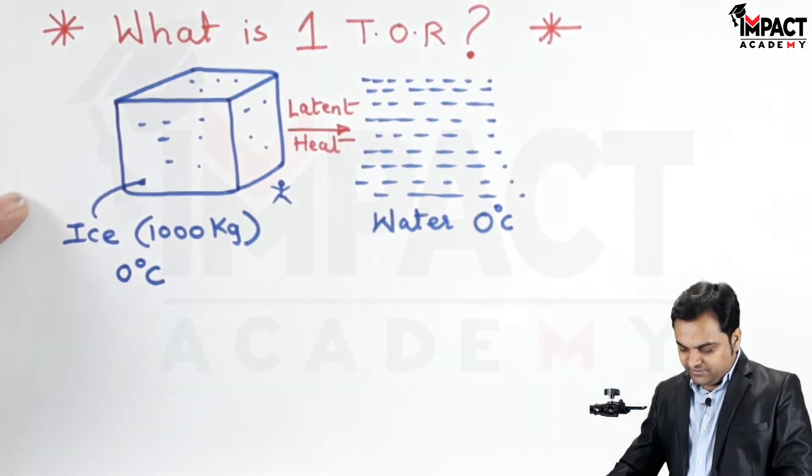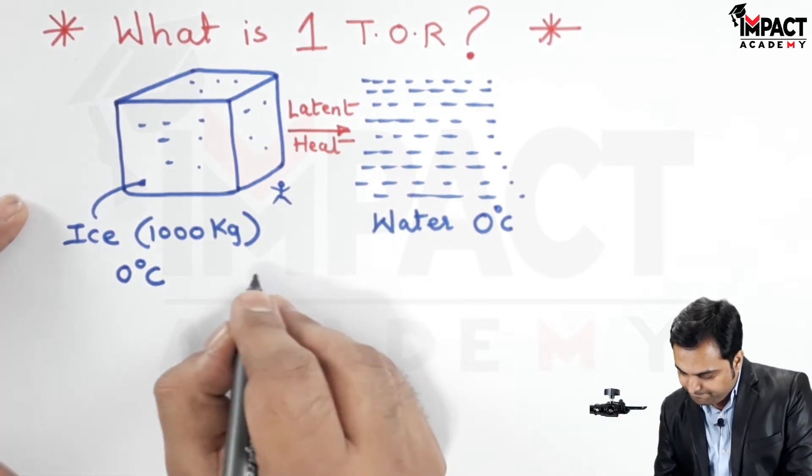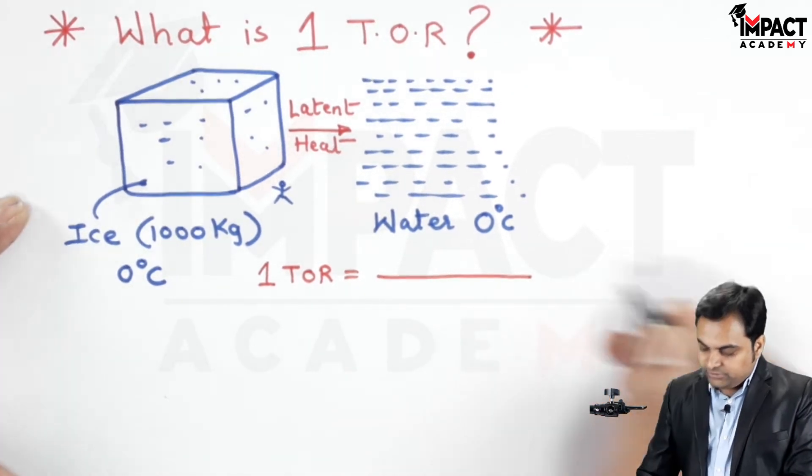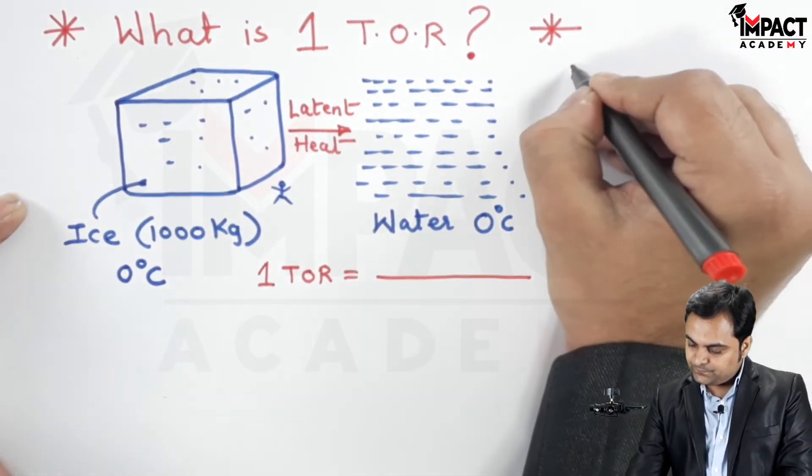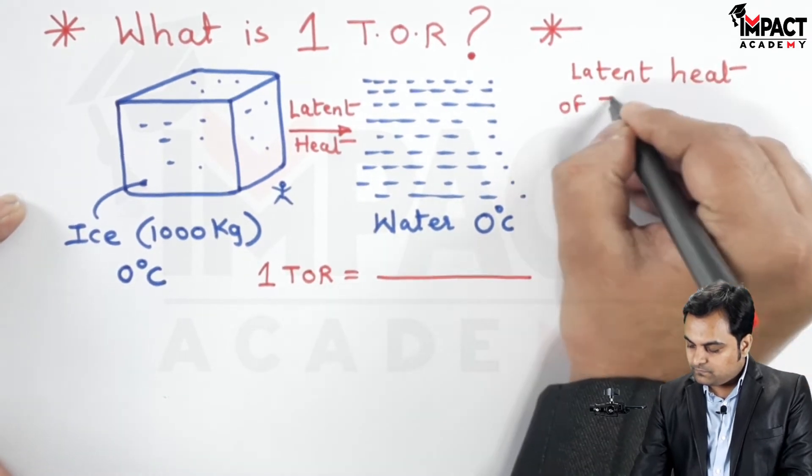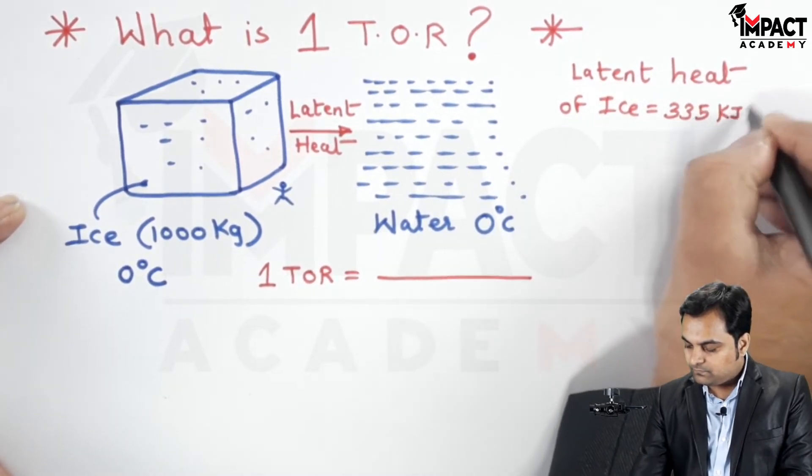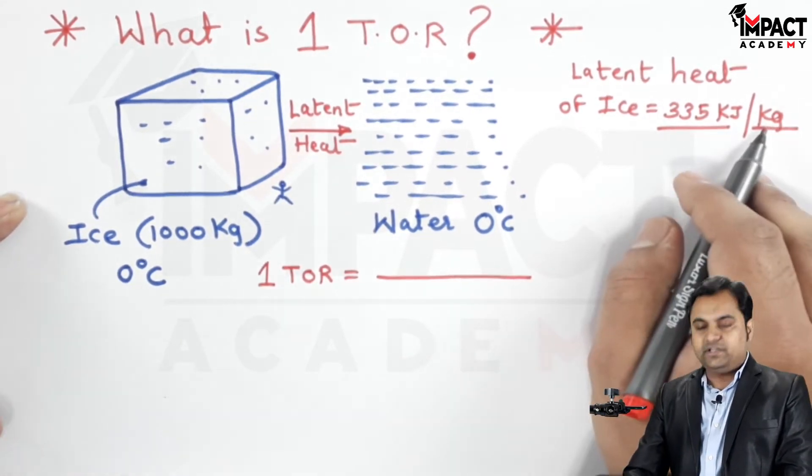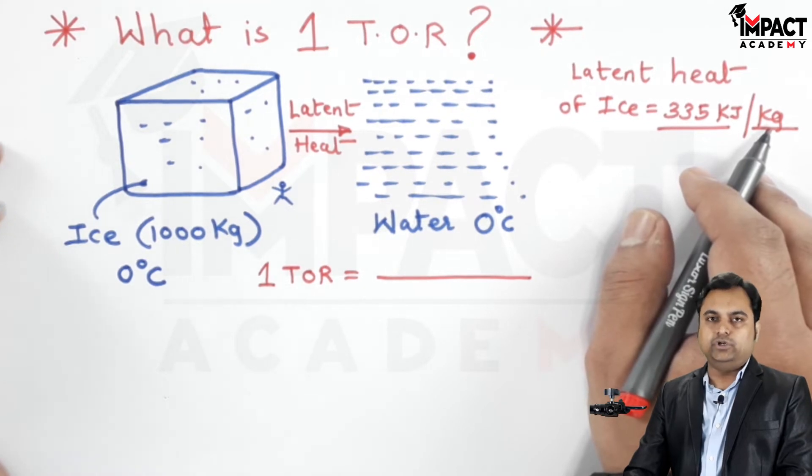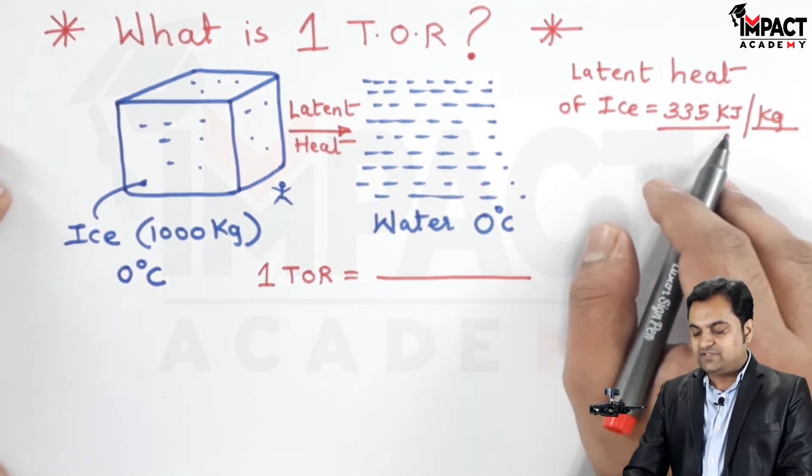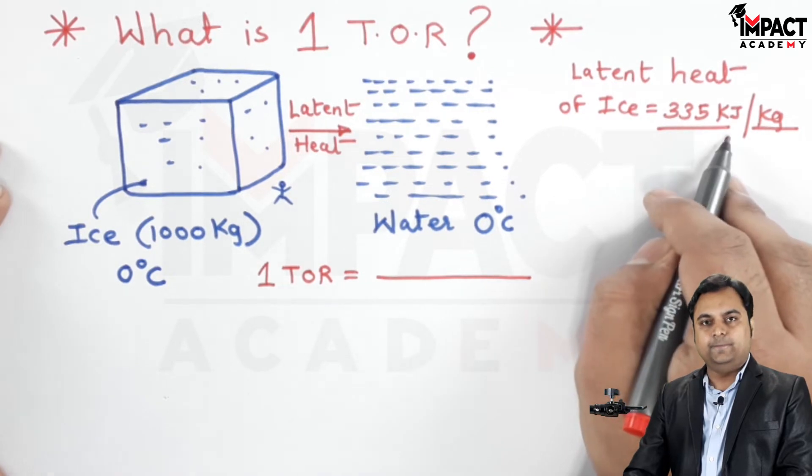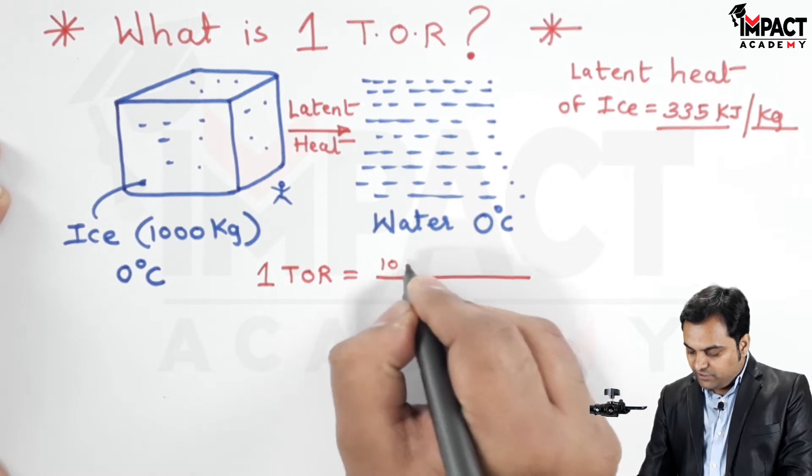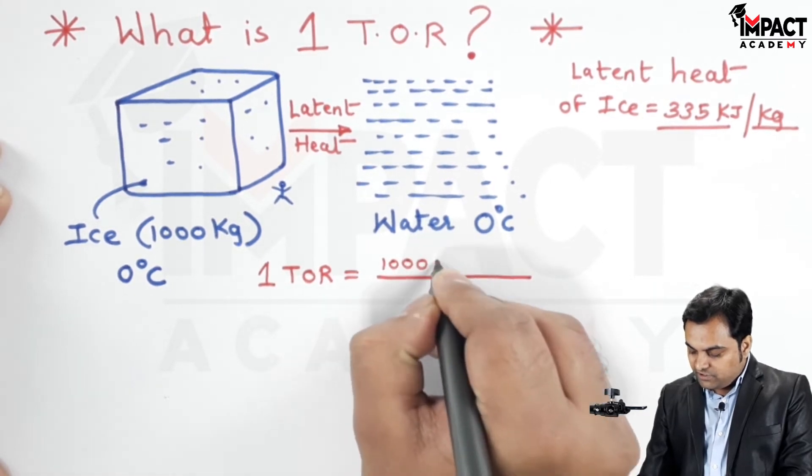And it would be written in this way like one ton of refrigeration is equal to, now the latent heat of ice is 335 kilojoule per kg. It means for 1 kg of ice to convert into water, the heat which has to be supplied is 335 kilojoule.